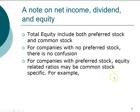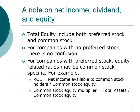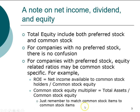If a company has preferred stock, some ratios are computed using only common stock equity. For example, return on equity: if you use net income available to common stockholders, you must divide by common stock equity — not total equity. The same applies to the equity multiplier. Always match common stock items to common stock equity, and total equity to total equity.